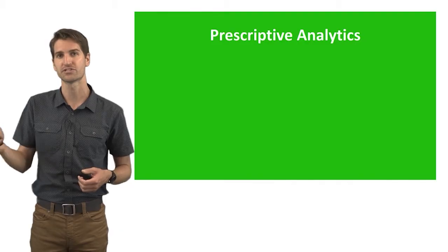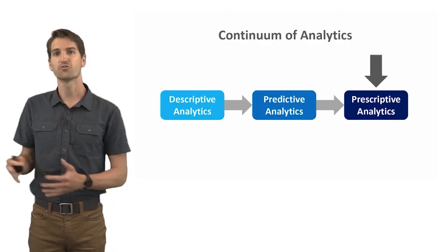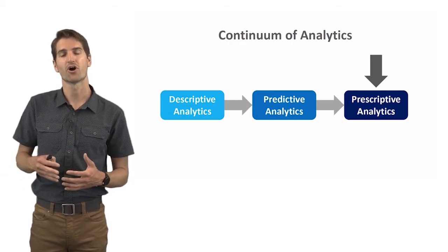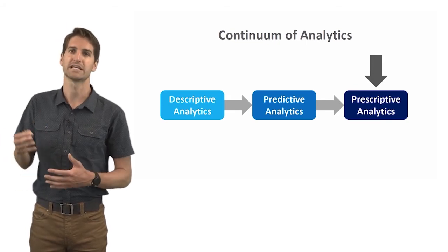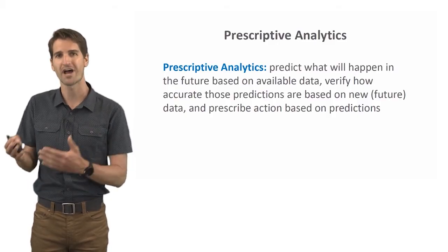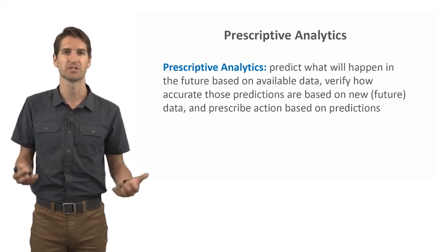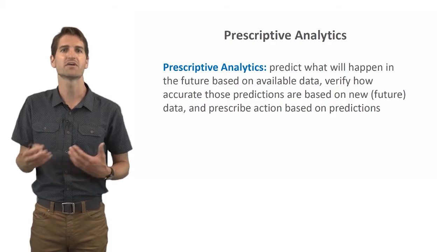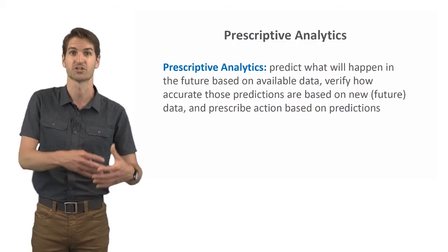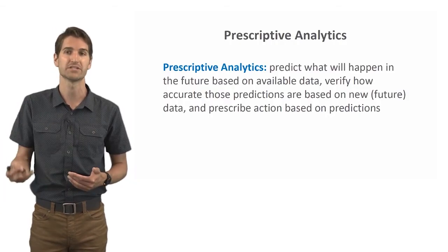Now it's time to move to the furthest end of the continuum: prescriptive analytics. It's one of the most advanced forms of analytics, and typically the hardest point for companies to reach. As the name implies, we're prescribing action based on analytics — we use data to predict what will happen in the future, verify how accurate those predictions are based on new data, and then take an extra step and prescribe action based on those predictions.